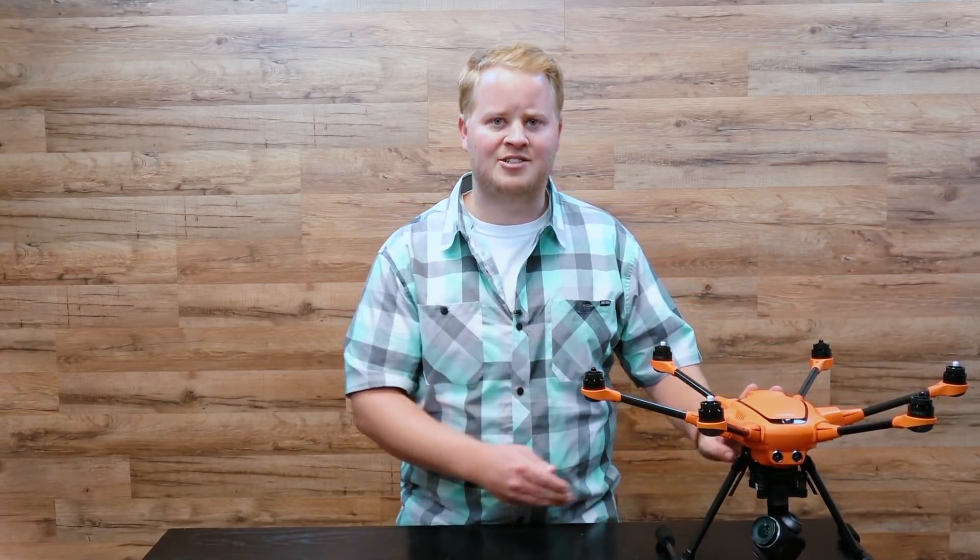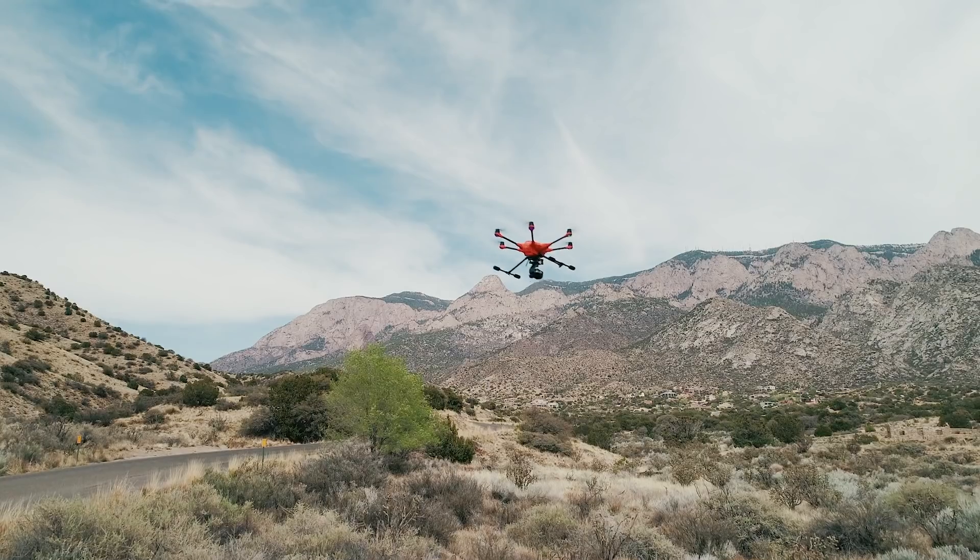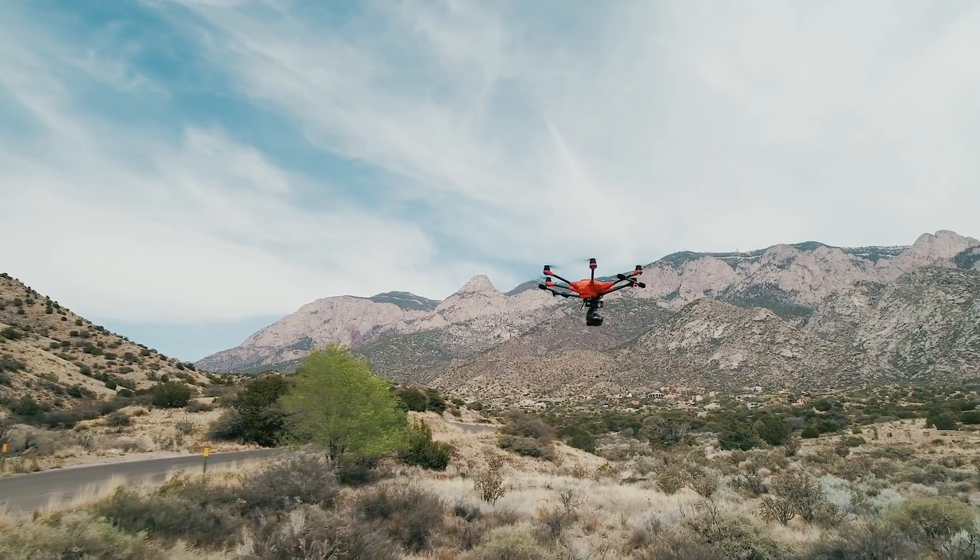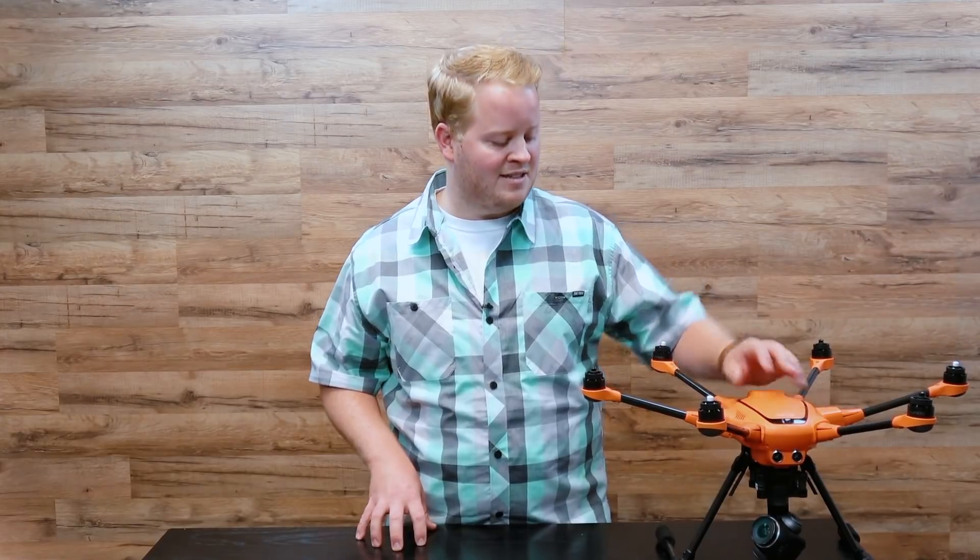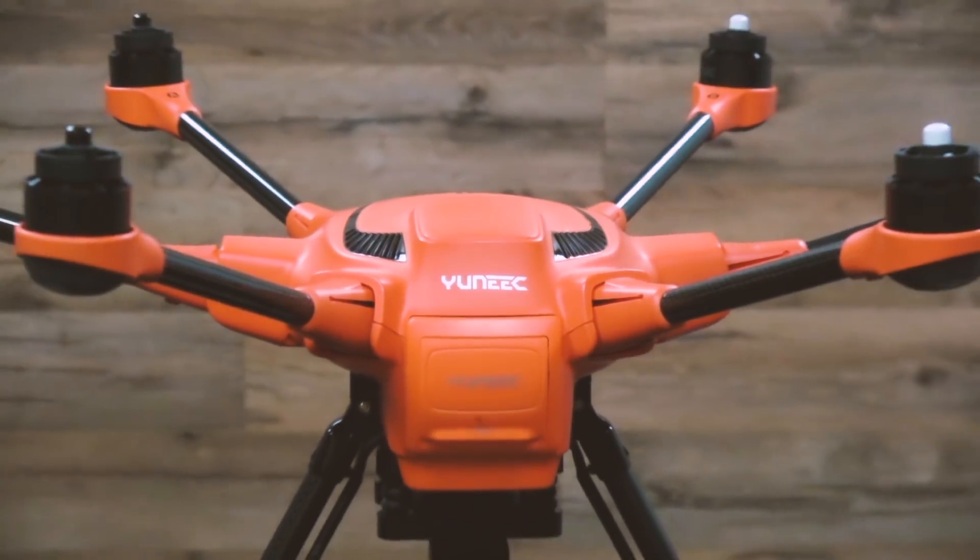The E90 camera is the same exact sensor that you would find in a Phantom 4 Pro, so you would think this drone is probably really good for mapping, right? It's got six arms, six motors. It can probably fly longer. But you're going to find out that they really are two very different things.